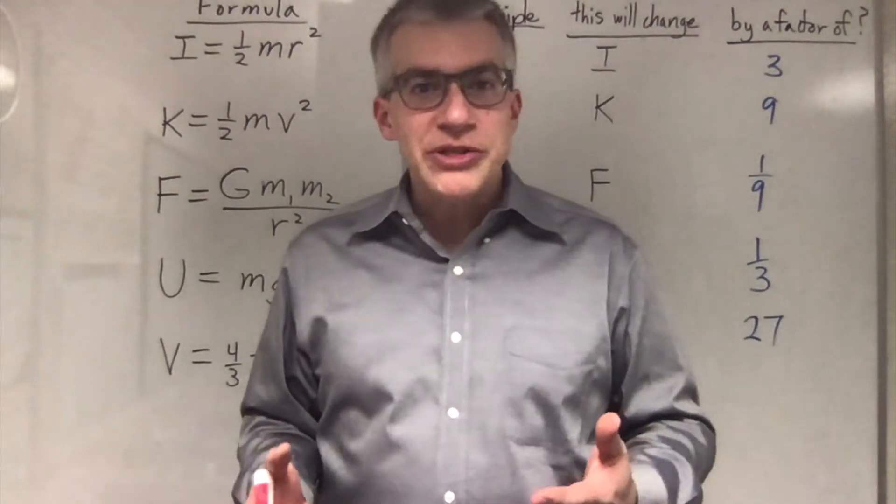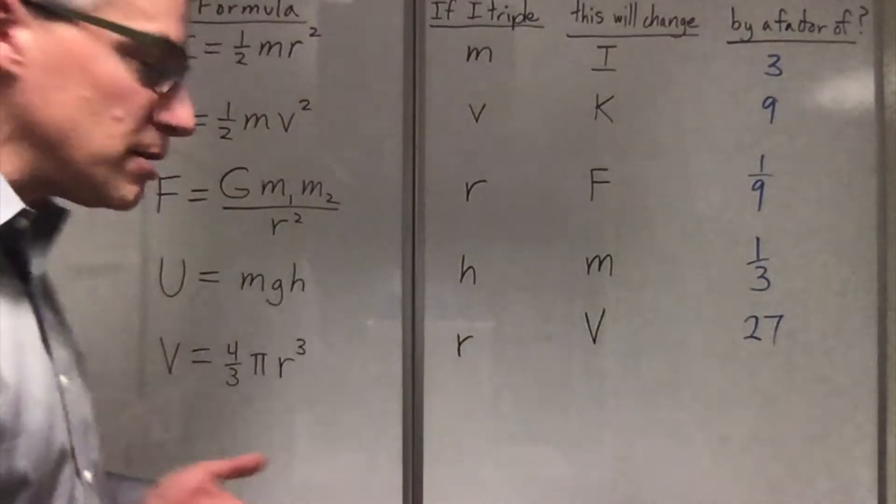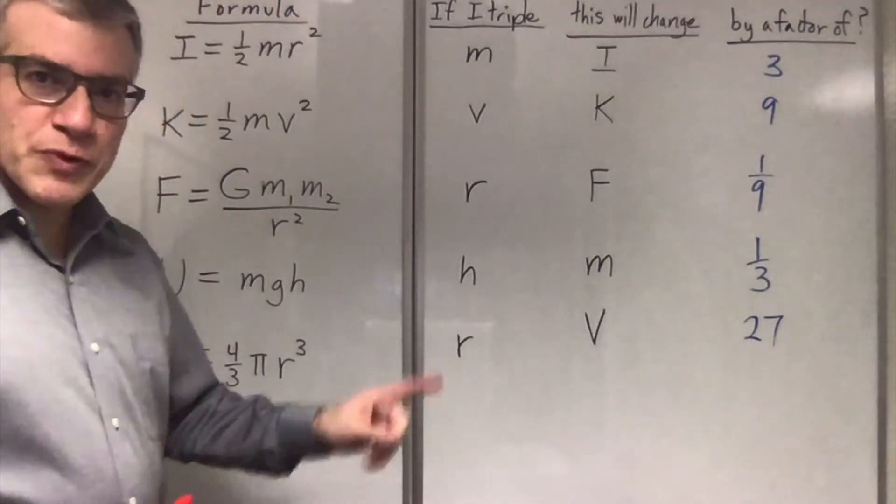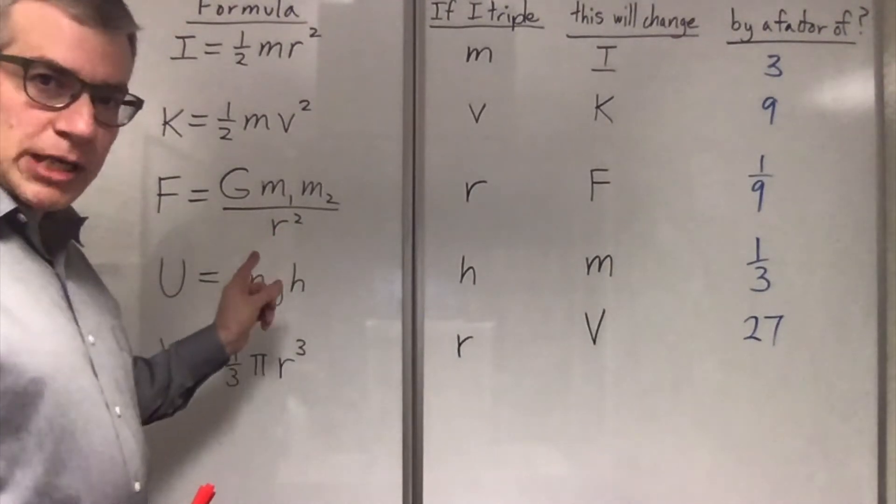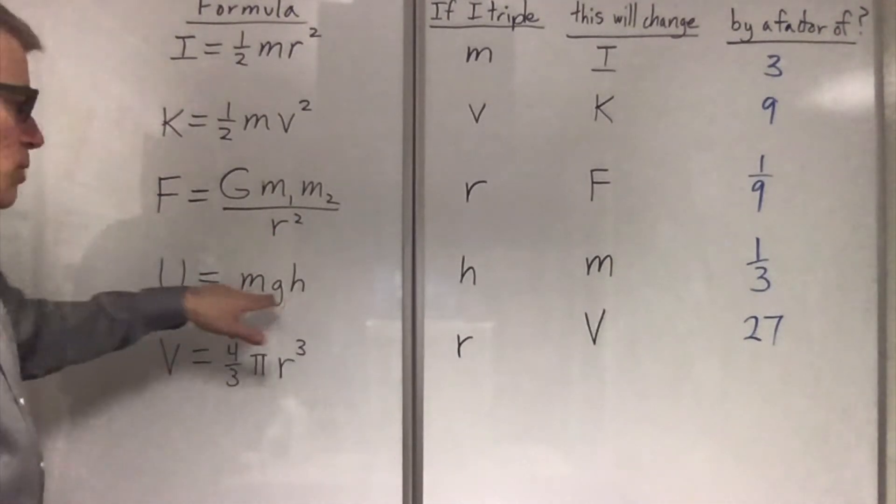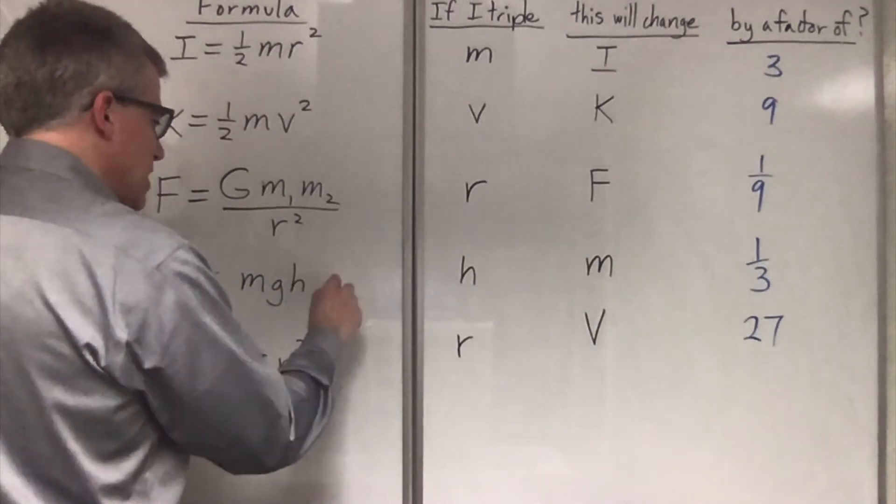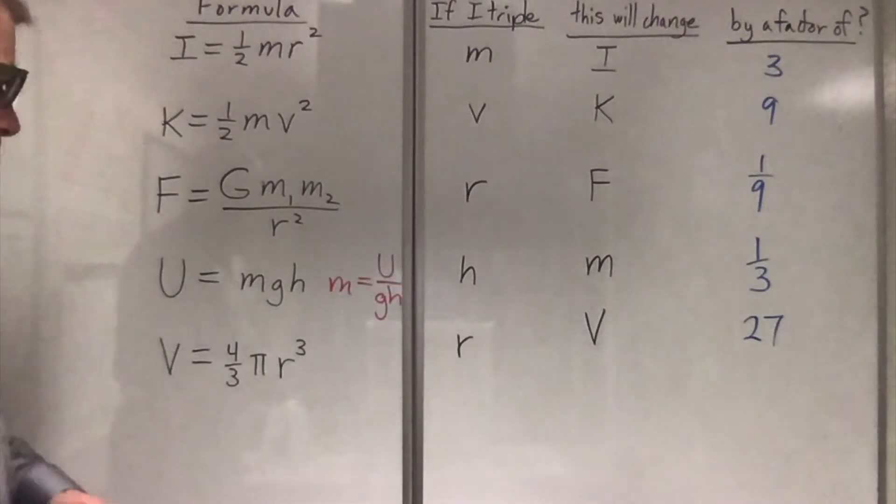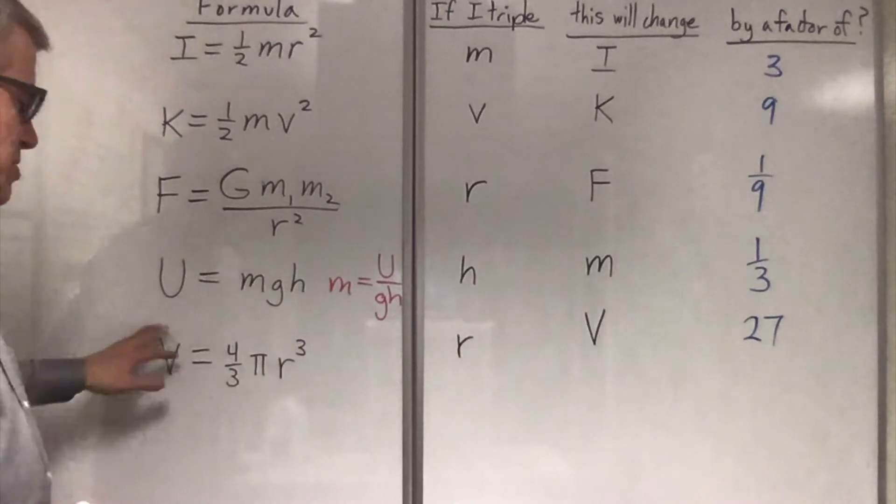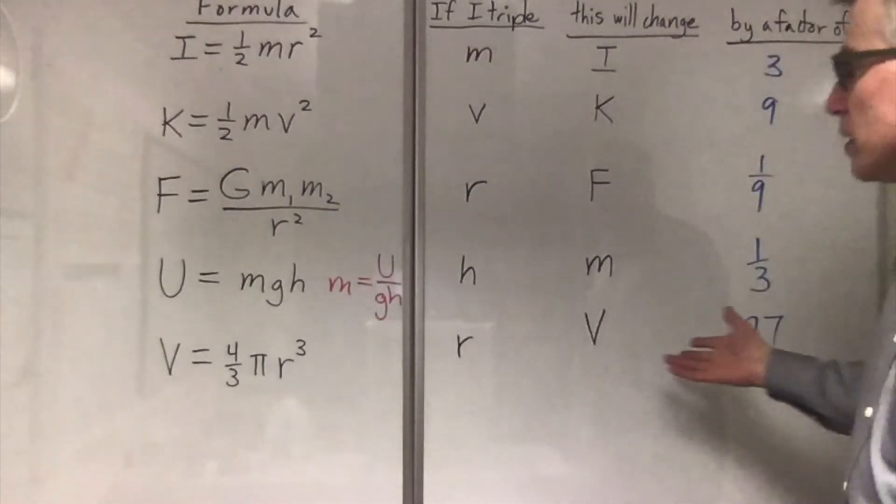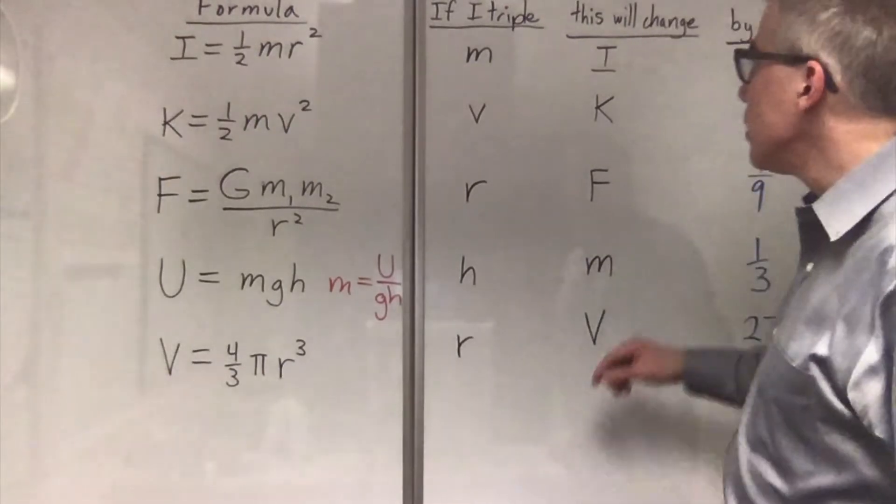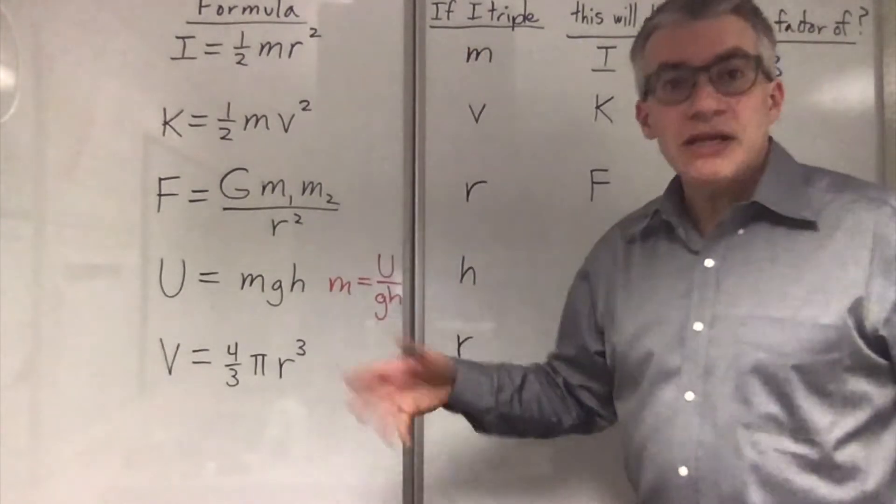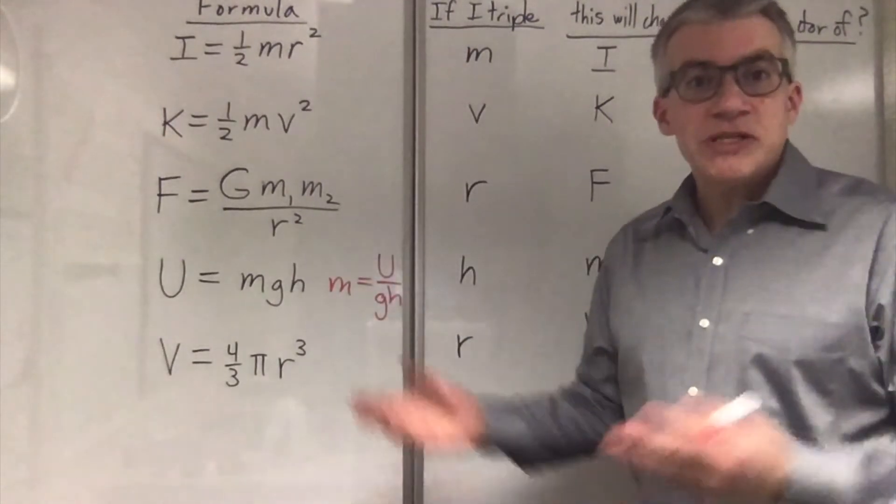I didn't go through any long algebraic manipulations. In fact, I basically did it in my head, just looking at the formula. So what's going on? Well, it helped that most of these were already solved for the variable I want to know the effect on. The exception was this, and I want to know how m will change. So in fact, I could write m equals u over gh to make it easier to see. And aside from that, they were all already solved for the output variable. And I'm only changing one variable at a time. So I look for the thing I'm changing, and I look to see, is it on the top or on the bottom? If it's on the top and I triple it, the thing's going to get bigger. If it's on the bottom and I triple it, it's going to get smaller.